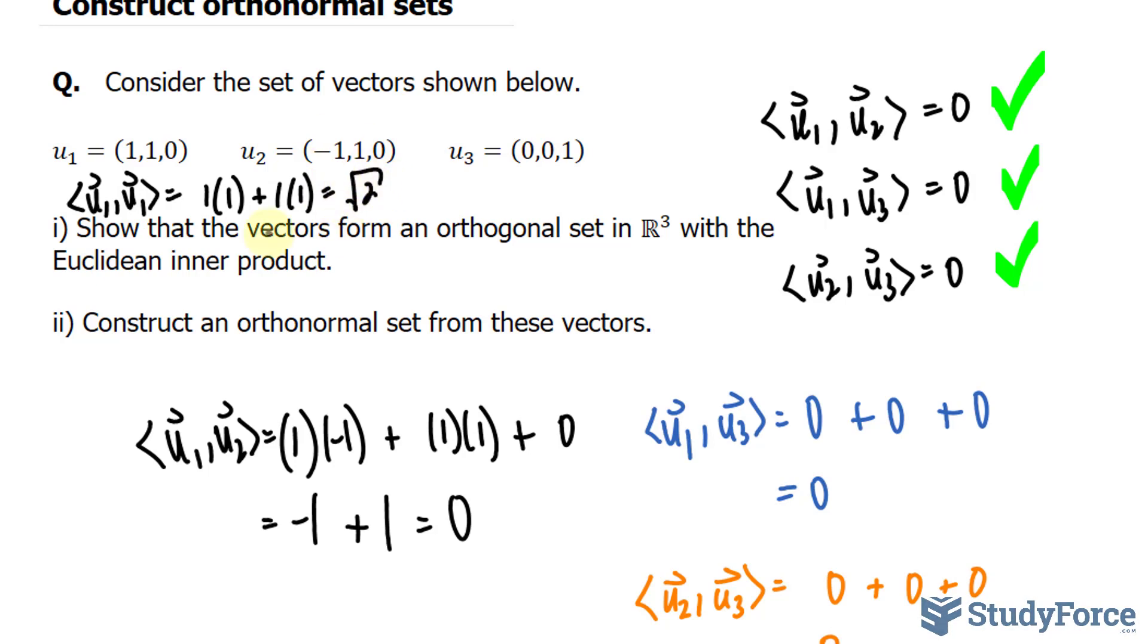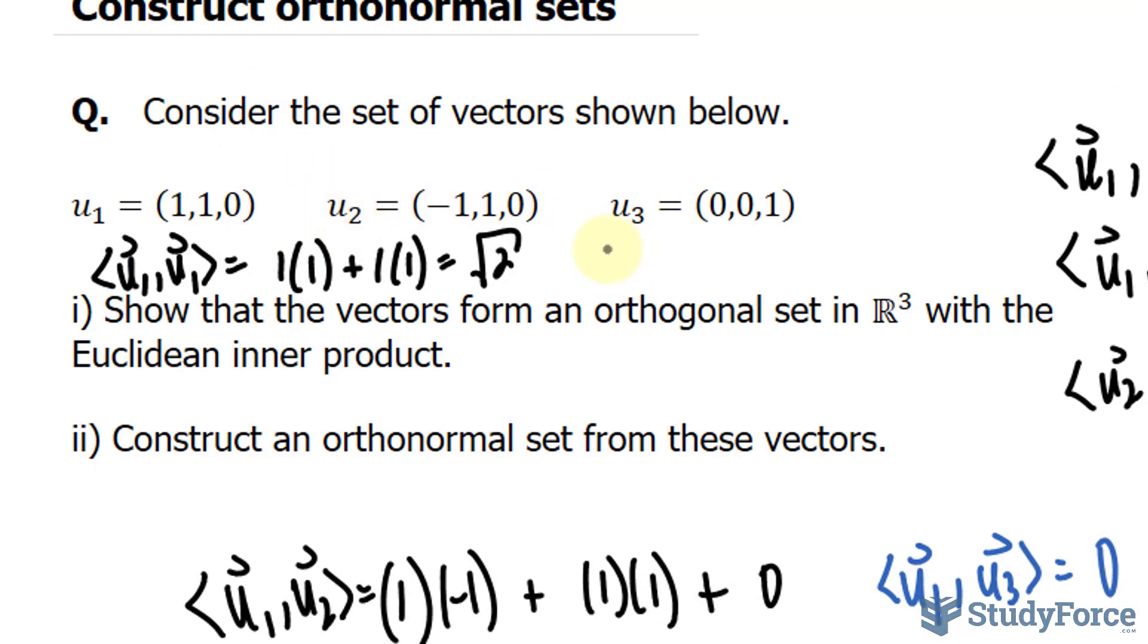To find the norm of this vector, we do the same thing, but for this vector, of course. Negative one times negative one plus one times one plus zero times zero. That's, again, equal to the square root of two. Don't forget that we are raising this to the power of half or square rooting, same thing. And lastly, if we want to find the norm of vector three, we will end up with one. You end up with the square root of one, which is one.